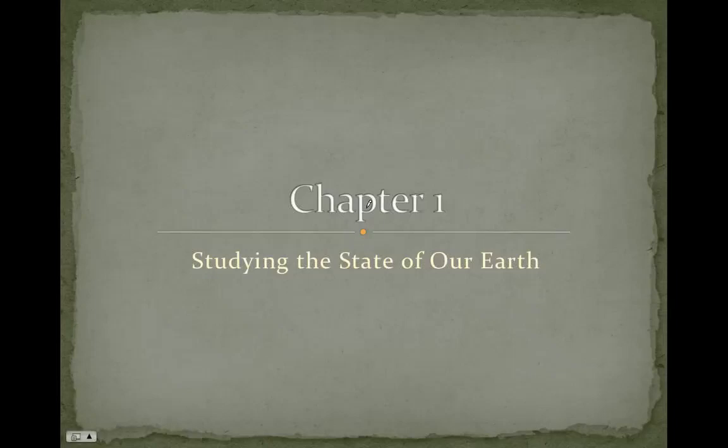Chapter 1. In this chapter we're going to take an overview of what environmental science is and the state of our Earth. We're going to see how it functions, how it interacts with other sciences, and look at important environmental indicators and problems occurring on Earth — sort of a general overview. This is going to set the foundation for the rest of the course, and so it's a very important chapter.